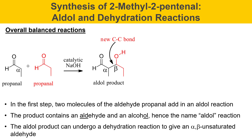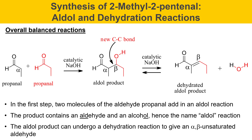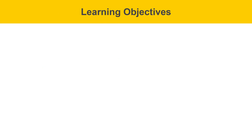This aldol product can undergo a dehydration reaction to give something called an alpha-beta unsaturated aldehyde. In the presence of catalytic sodium hydroxide, it forms a species with a new double bond between the alpha and beta positions, and water is produced as a coproduct.